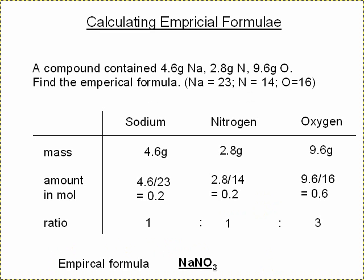Here's the second example. It says a compound contained 4.6 grams of sodium, 2.8 of nitrogen, 9.6 of oxygen. Find the empirical formula. And here you're given the Mr values, or the relative atomic masses. So putting this in a table, there are the masses that you're given. We're going to work out the amount in mole by taking the mass, divide it by the relative atomic mass, or the Mr.